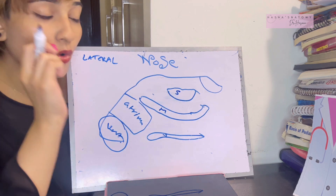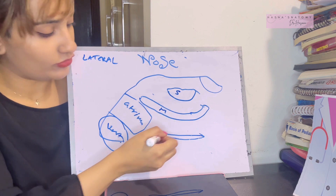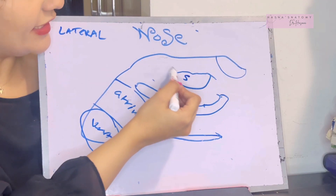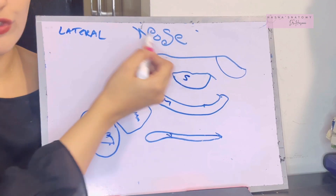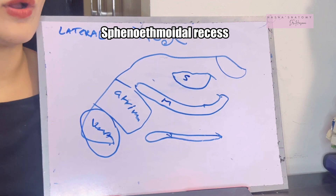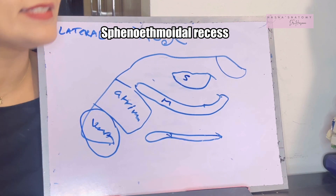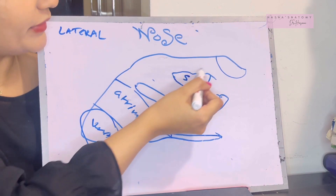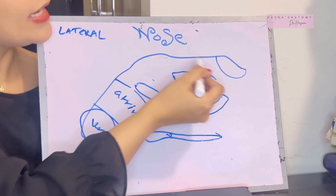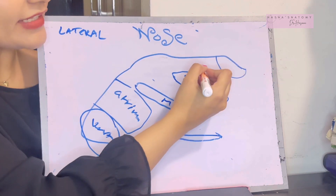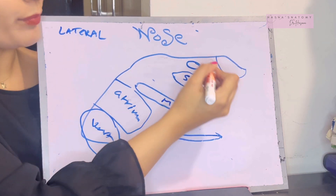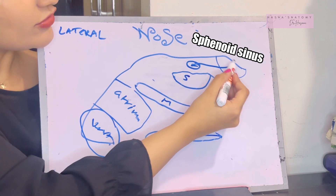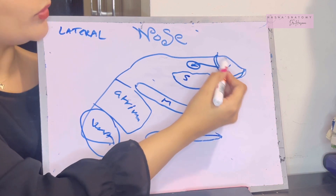Basically, the openings lie in the meatuses. And there is another place where an opening lies — this area above the superior concha is known as the sphenoethmoidal recess, because you can see it's the sphenoid bone and the ethmoid bone. In the sphenoethmoidal recess, there is the opening of the sphenoid air sinus.